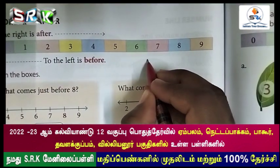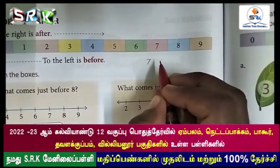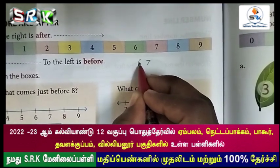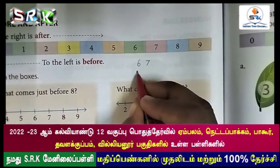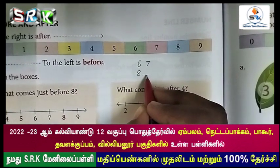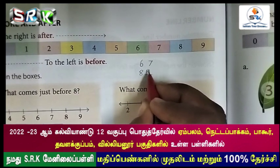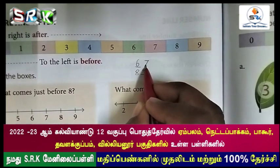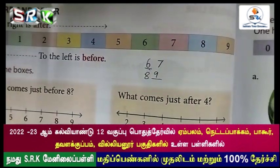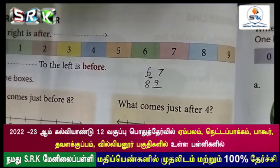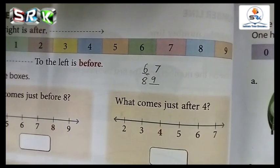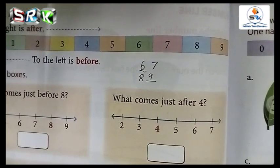Seven — the before number of seven, what number will come? Six. Eight — the after number of seven, what number will come? Nine. So seven: before is six, after is nine. Nine before number is eight; eight after number is nine. Here are some examples and you have to find out the answer.